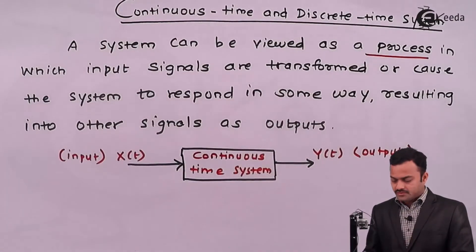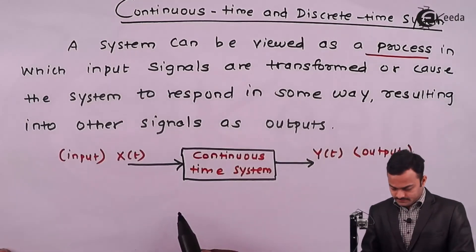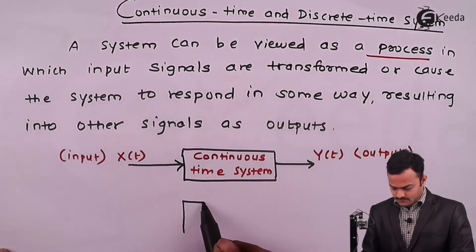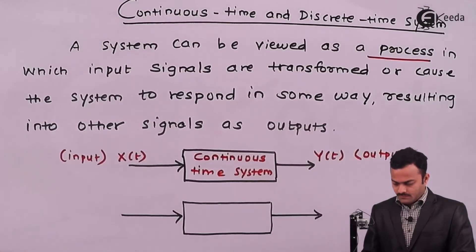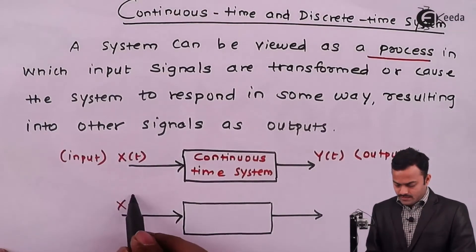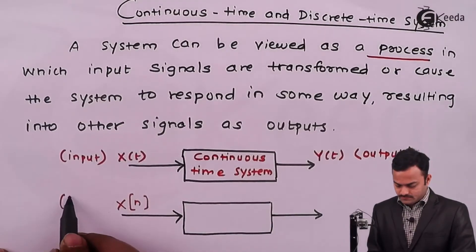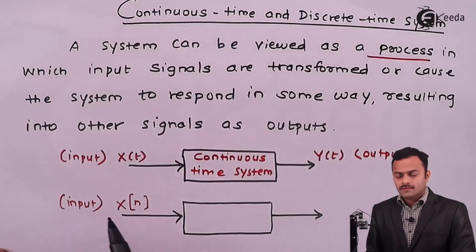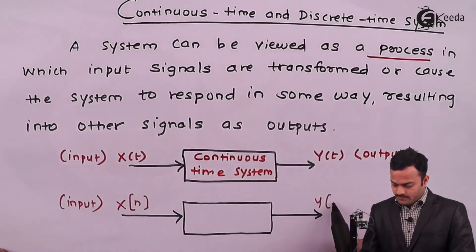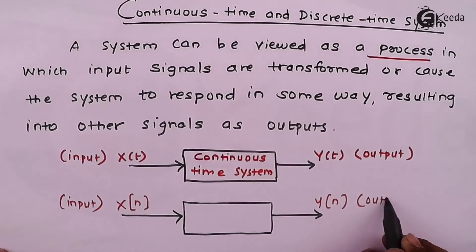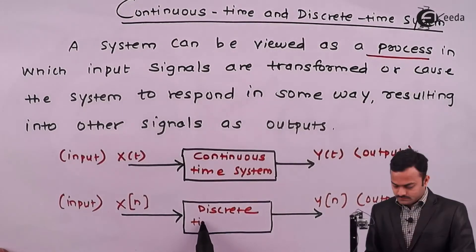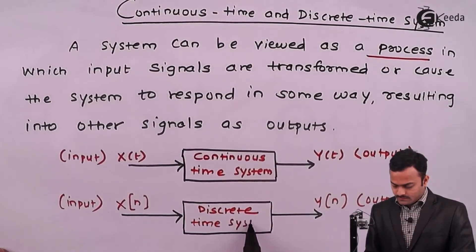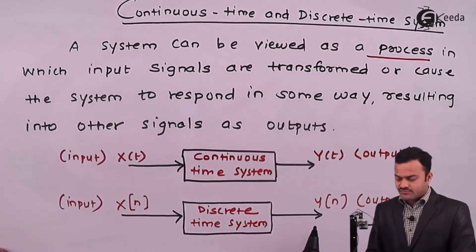The same representation we can have for a discrete time system as well. Here x[n] is the input signal, and to get y[n] as the output signal, we need a system which we call a discrete time system, so that the input signal is transformed to the output signal.